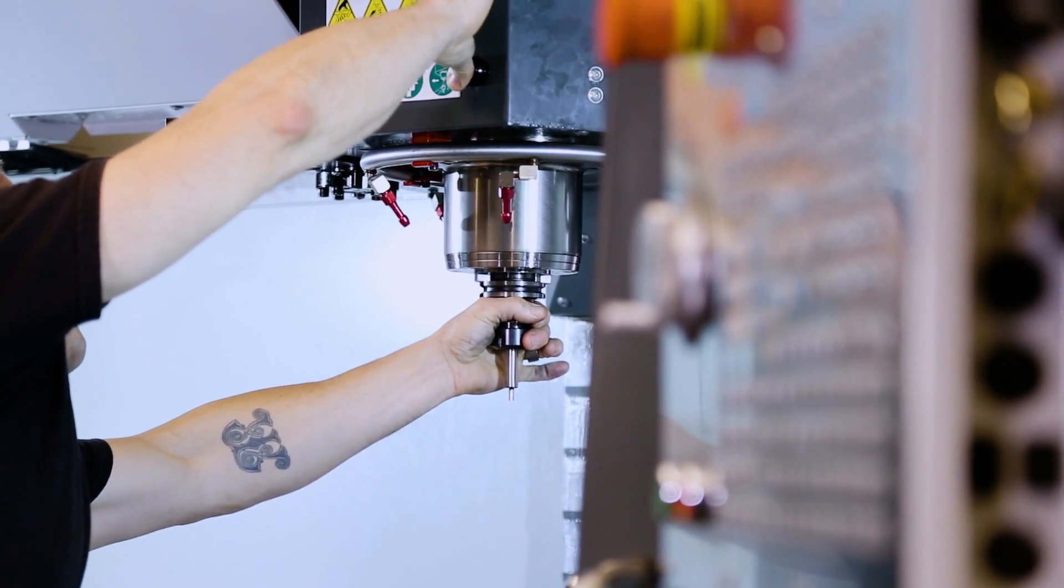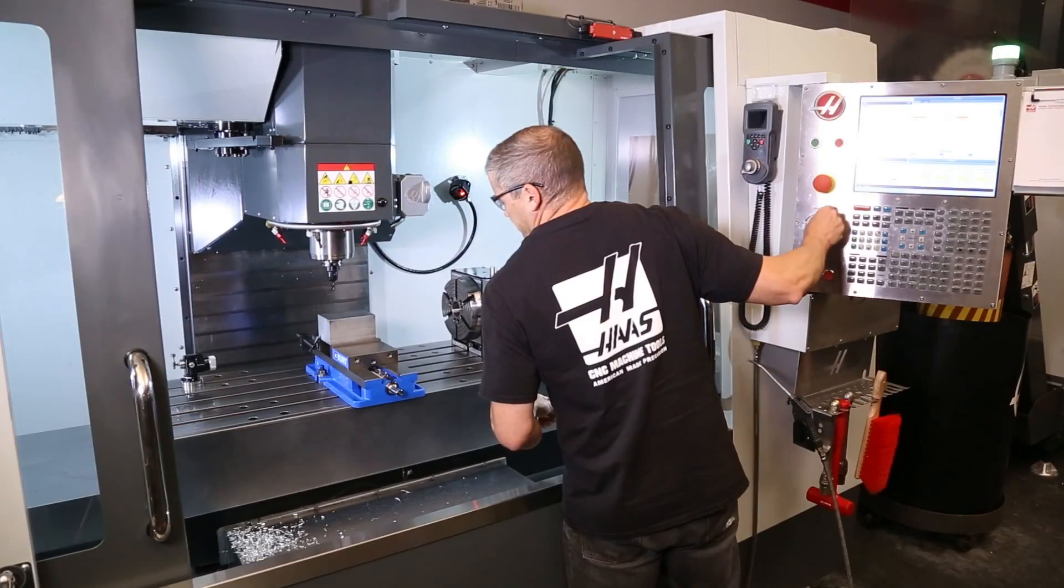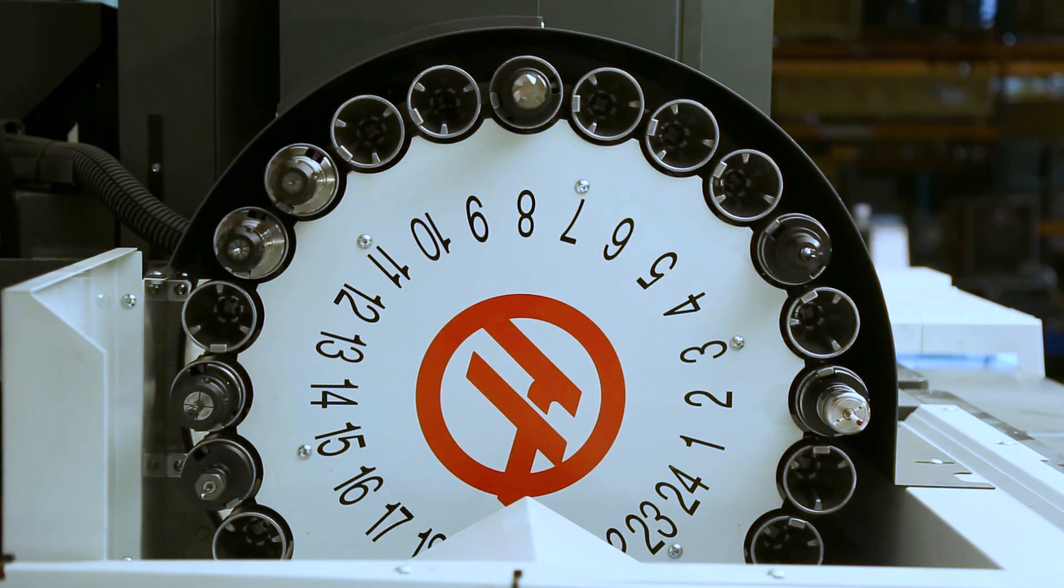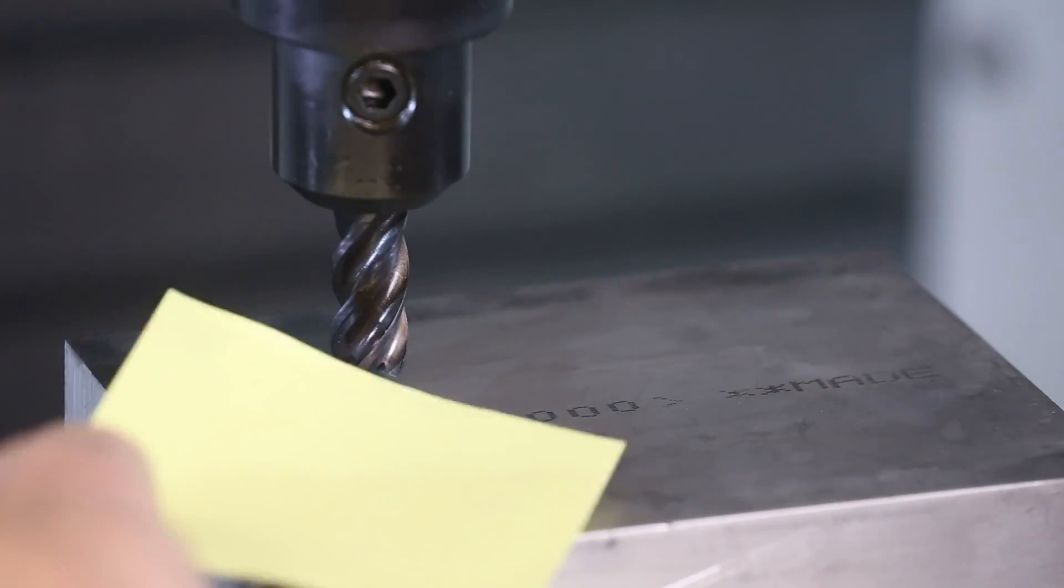We'll check our workpiece with an edge finder, and set Z with a tool we already checked. We've got eight tools, and we'll touch them off using our workpiece. Yep, using a slip of paper.